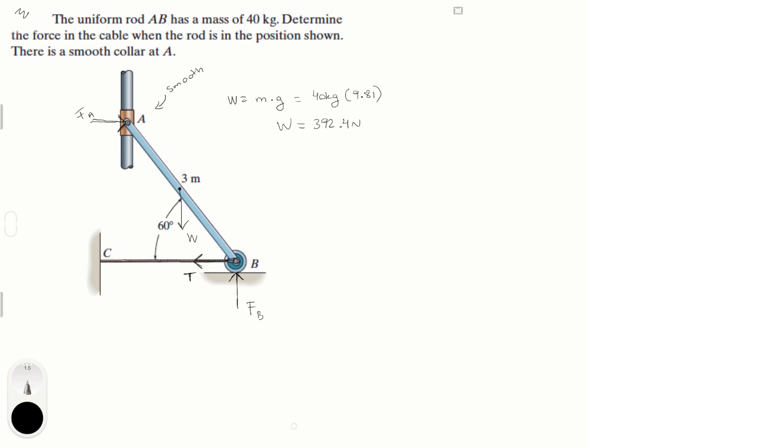So we know that the sum of the forces at x is equal to 0. Therefore, the sum of the forces at x are F of A going to the right minus the tension T. Now the weight and F of B are acting vertically.